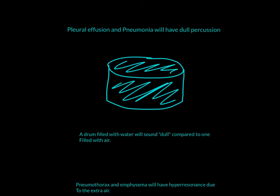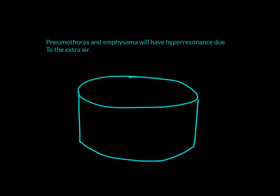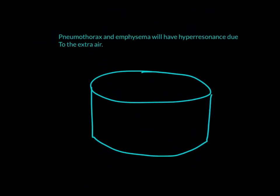In contrast, if you have a pneumothorax or emphysema, you will have hyper-resonance. That makes sense because you have more air than normal. In pneumothorax, there's more air in the pleural cavity; in emphysema, there's more air in the lung than normal, which also explains the increased total lung capacity due to air trapping, creating a hyper-resonant sound.